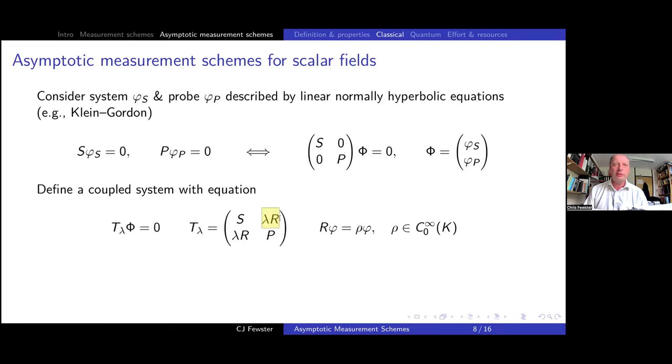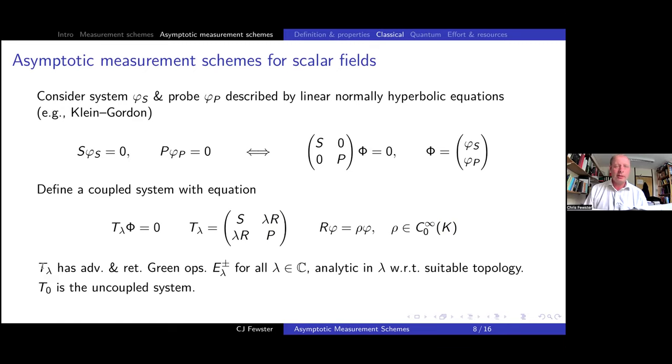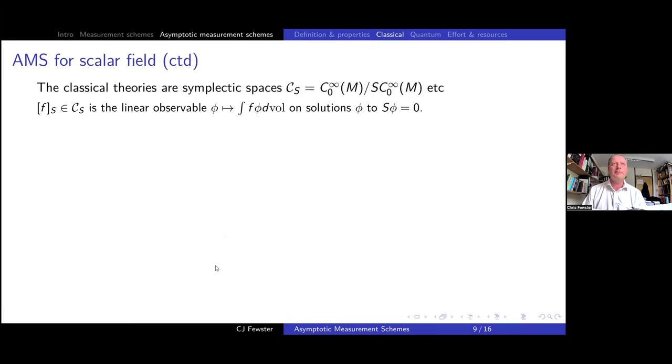Our coupled version of this theory, we're going to throw in an off diagonal term, lambda r. And r is just going to multiply by a smooth, compactly supported function living in the coupling region. So this is going to be our coupled system and probe coupled together. The nice thing is that such systems actually do have advanced and retarded green operators, and I'll call those e plus and minus sub lambda. In fact, even for complex values of lambda. And it's even analytic in lambda with respect to a suitable topology that I will not bore you with just now. But the uncoupled system, of course, can be recovered simply by putting lambda equals zero. So we have a good classical theory of coupled fields and nice green operators.